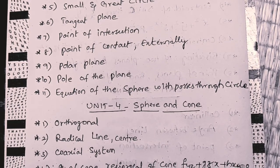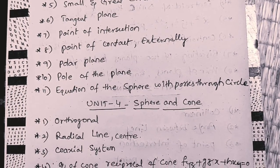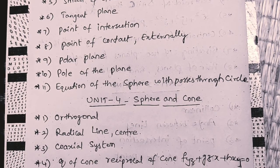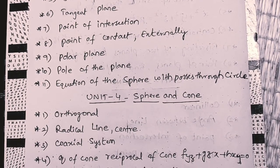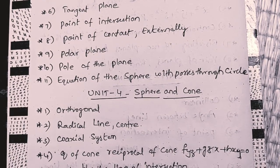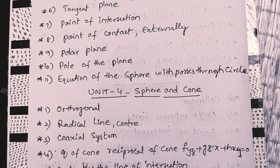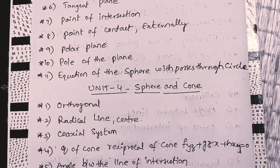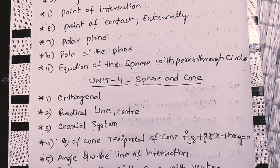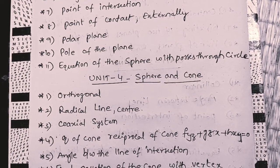Coaxial system. Very, very, very important topic. Coaxial system, unit 4 is 100%. Coaxial system is 10 marks. Equation of cone reciprocal of the cone f yz plus g zx plus h xy equals 0. And next question.